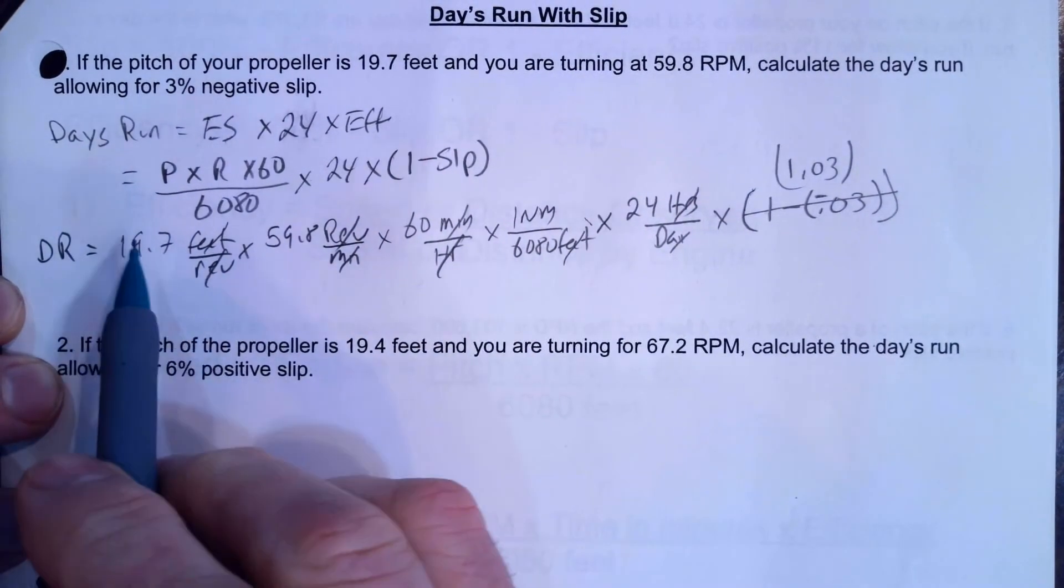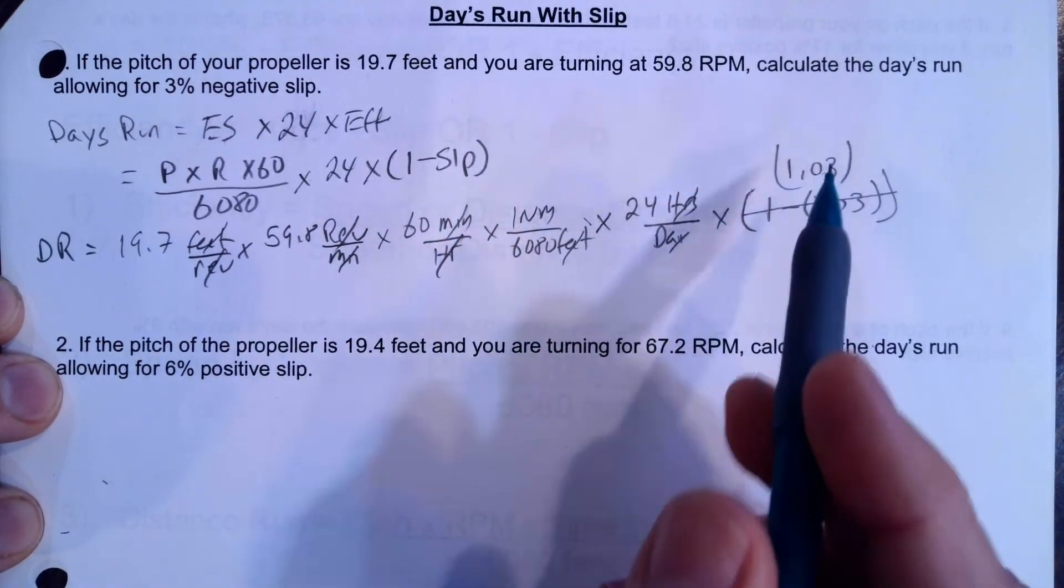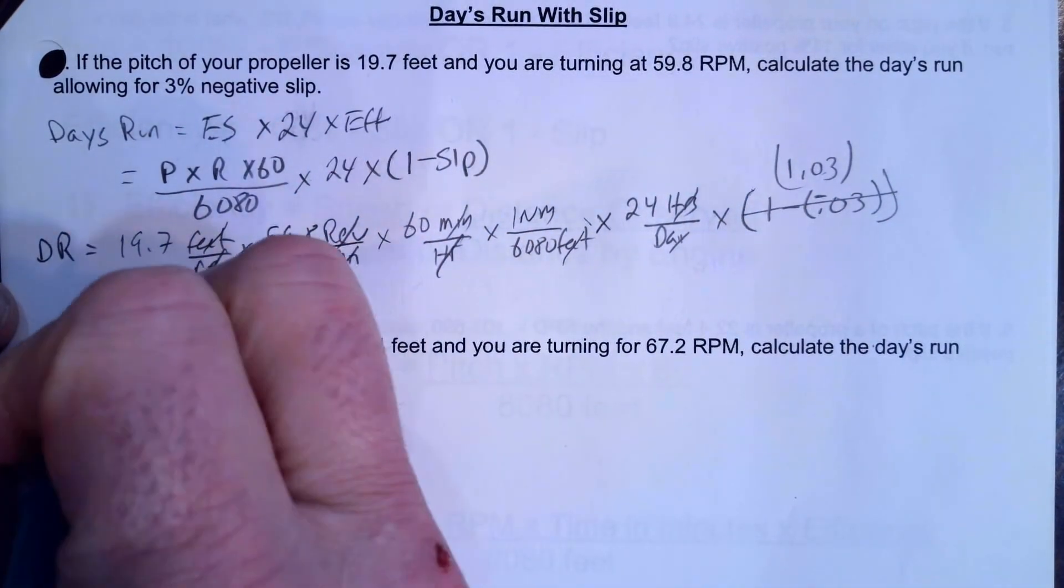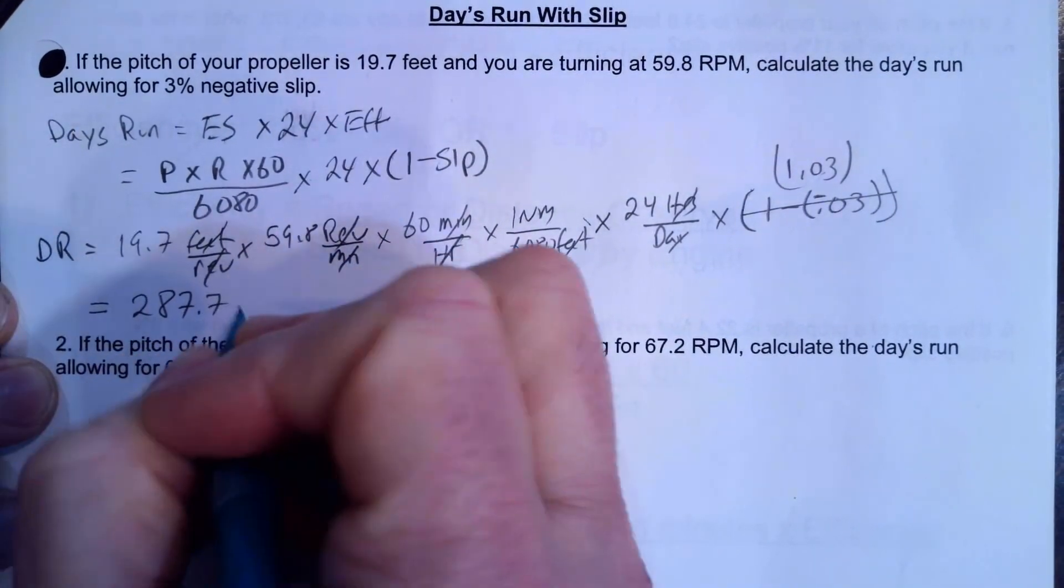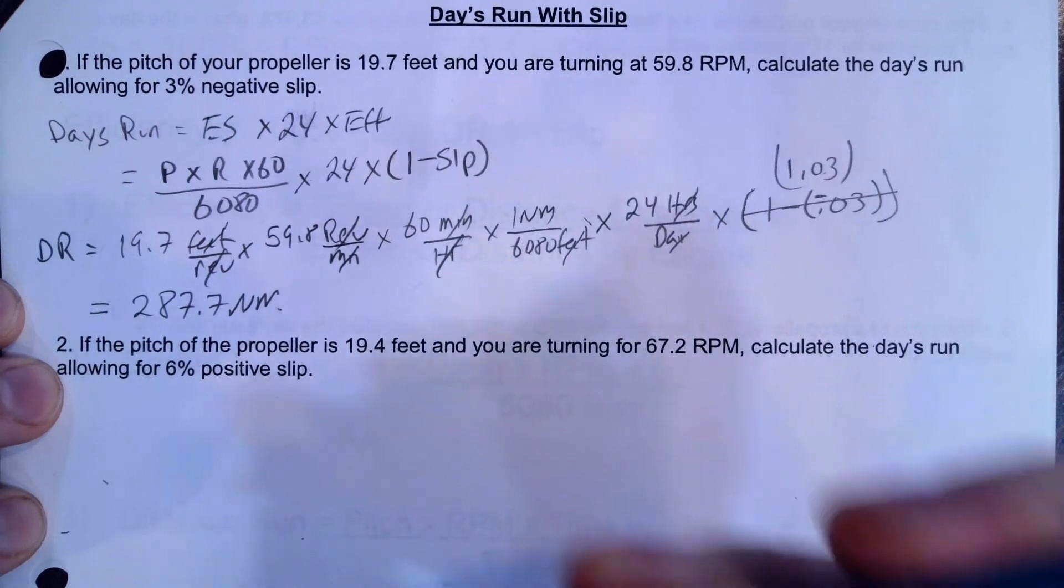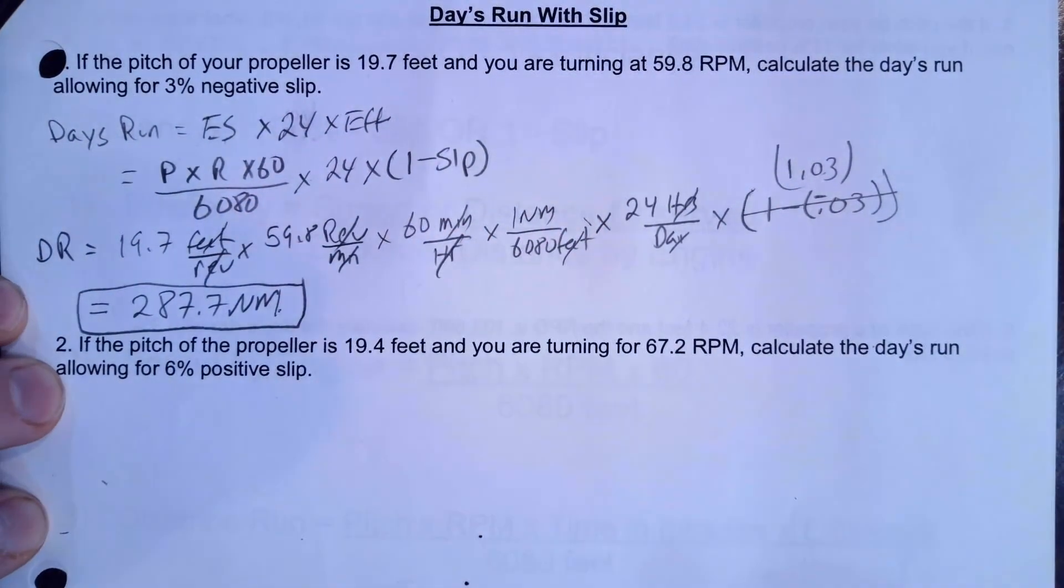So in my calculator now, I'll go 19.7 times 59.8 times 60 times 1 times 24 times 1.03 divided by 6080. And when I do all that, you'll get 287.7 nautical miles. And that is the answer for that. Thank you so much.